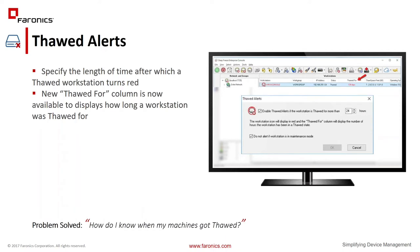Thaw alerts is another feature we added. Customers were asking for the ability to clearly see when workstations are thawed for longer periods of time — sometimes we accidentally forget to thaw machines and aren't aware. What we've done is given you the ability to set up a thaw alert: if you set it to 24 hours, after 24 hours of being thawed that machine will turn red and the icon will turn red as well. We also have a checkbox to ignore any machines still in maintenance mode, so they won't turn into a red thaw icon.